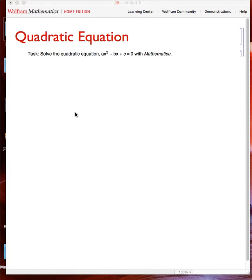Today we are going to try and solve the quadratic equation ax squared plus bx plus c equals zero with Mathematica. Since Mathematica is a functional language, we have to think in terms of a function.